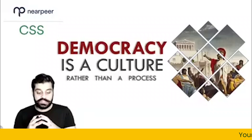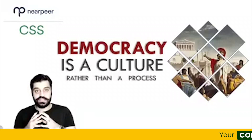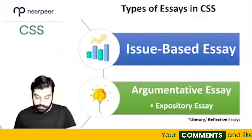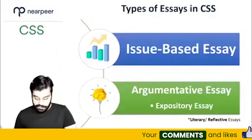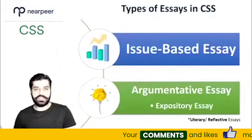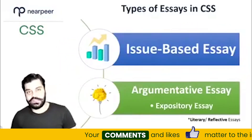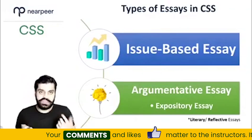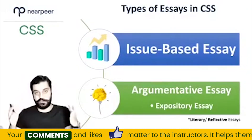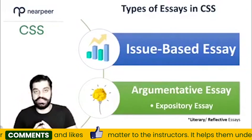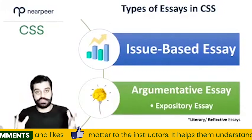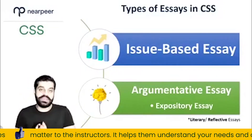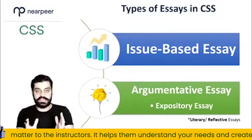The topic is: 'Democracy is a culture rather than a process.' First of all, it falls under a certain category of English essay types. It is not strictly necessary that you know the exact category, but for conceptual clarity you should be able to pinpoint it, which has been explained completely in the lectures.